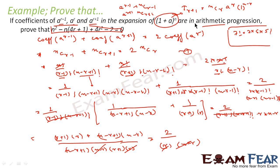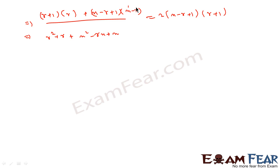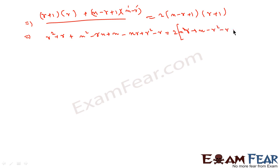After simplification, we get: r times (r plus 1) plus (n minus r plus 1) times (n minus r), all divided by r, equals 2 times (n minus r plus 1) times (r plus 1). Expanding the left-hand side: r squared plus r, then multiplying out (n minus r plus 1)(n minus r) gives n squared minus rn plus n minus nr plus r squared minus r. On the right-hand side, expanding 2(n minus r plus 1)(r plus 1) gives terms in nr, n, r, and constants.